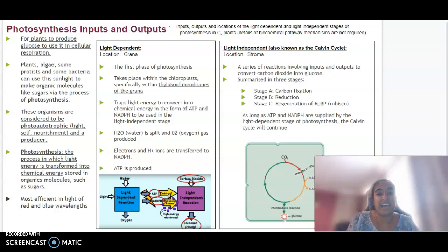We'll start with the light dependent stage. In the chloroplast, this occurs in the grana, which is the first stage of photosynthesis. It takes place in the thylakoid membrane where light energy is trapped and converted into chemical energy in the form of ATP and NADPH, which will be used in the light independent stage. Water is being split and oxygen gas is produced. Electrons are transferred to NADPH and ATP is produced. I like to use this diagram here. Arrows going in are our inputs, light and water, and our outputs are oxygen, ATP and NADPH, which go into the light independent reaction.